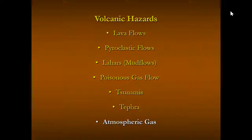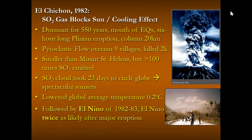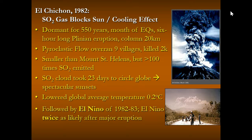SO2 is typically emitted from volcanoes during eruptions. When it enters the atmosphere, it causes a cooling effect. El Chichón in 1982 is a good example — it was dormant for 550 years, then after a month of earthquakes, had a six-hour Plinian eruption with a column 20 kilometers high. A pyroclastic flow overran several villages, killing a couple thousand people. Even though it was smaller than Mount St. Helens, it released 100 times more SO2. After circling the globe for 23 days, the dust and SO2 lowered the global average temperature by about 0.2 degrees C.